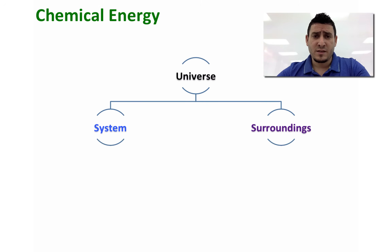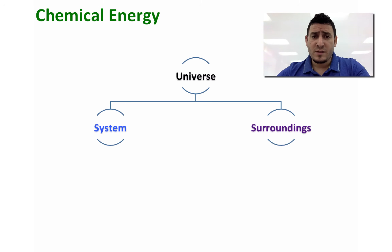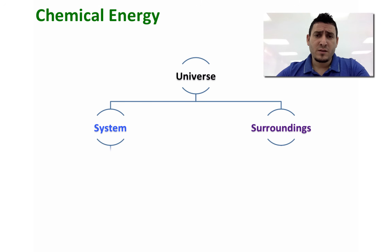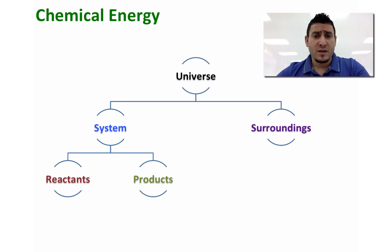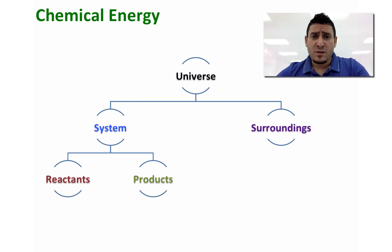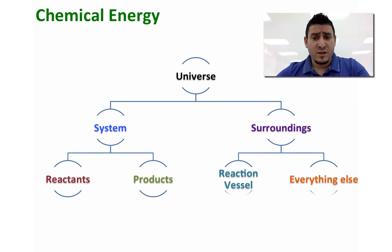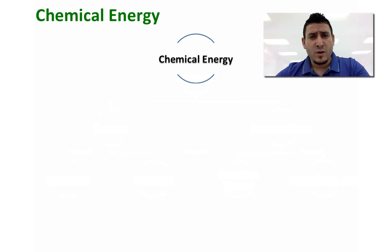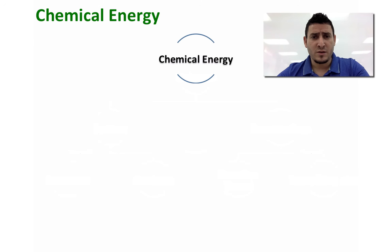Before we continue discussing energy, we need to define two important parts of the universe: the system and the surroundings. The system is where we focus, so if we have a chemical reaction, our system would be the reactants and the products. In this case, the surroundings will be the reaction vessel and everything else. Since we are studying chemistry, our system will always be a chemical reaction.